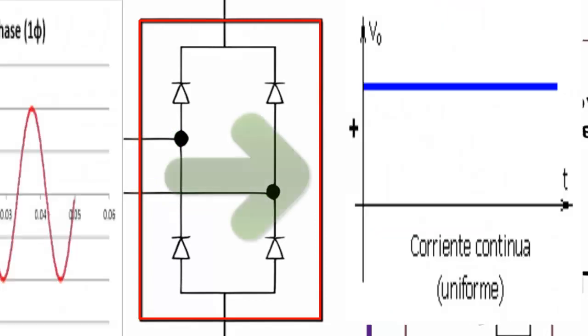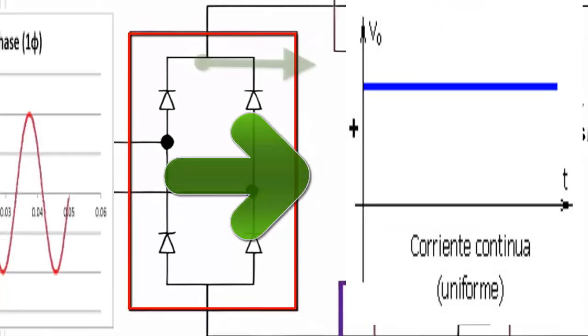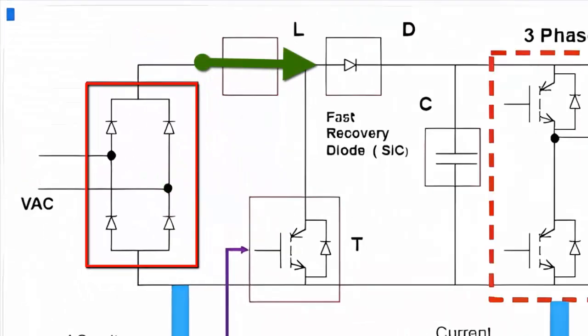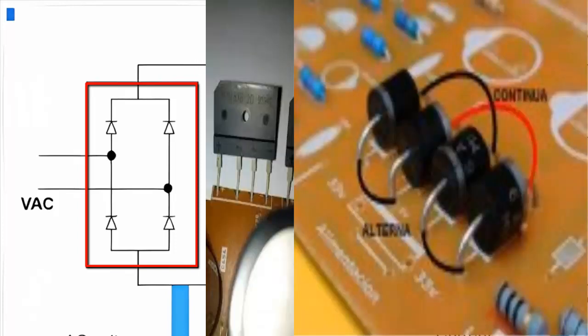The first section of the air conditioner's board is responsible for converting alternating current into direct current. Subsequently, the current flows in only one direction, for example, from positive to negative, and never in reverse.